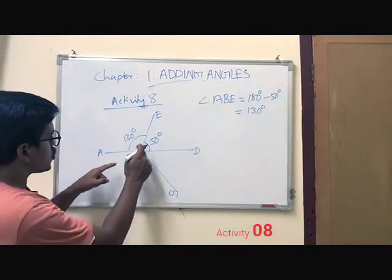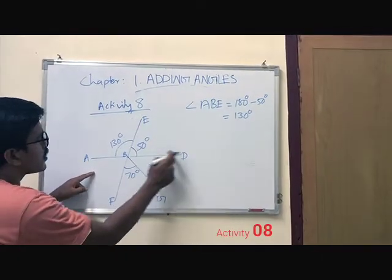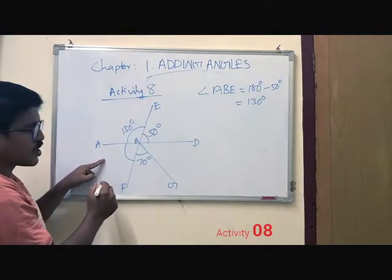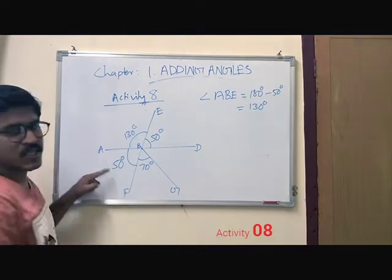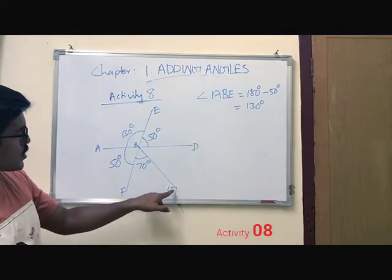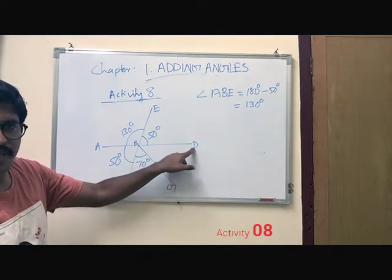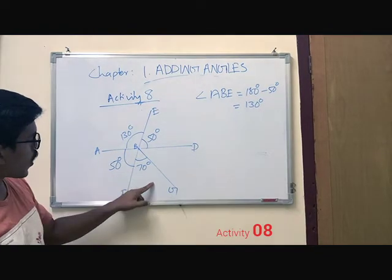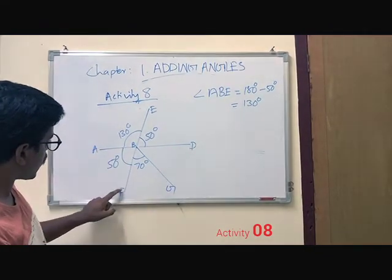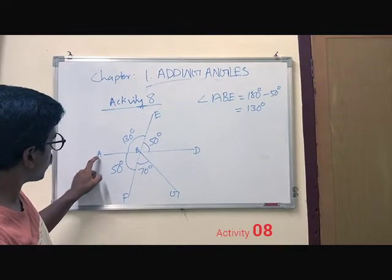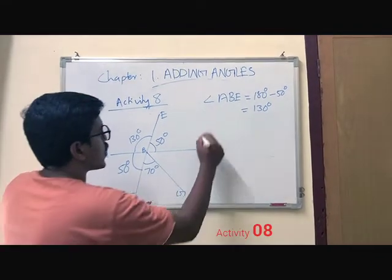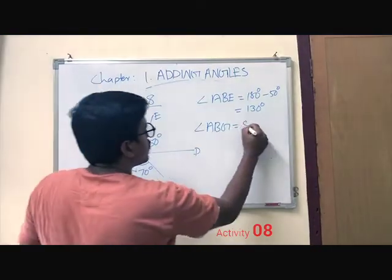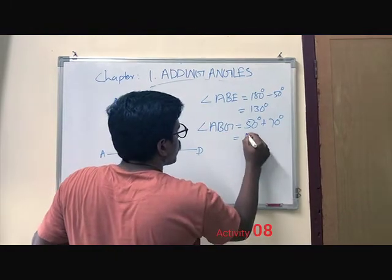Now you can see angle E, B, D and angle A, B are opposite — opposite angles are equal — so angle A, B, E equals 50 degrees. We have to find out one more angle. We need to add angle A, B, F and angle B, G first: 50 plus 70 degrees equals 120 degrees, giving us angle A, B, G.